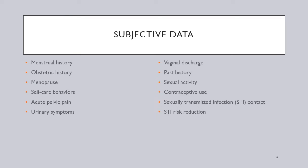Ask about self-care behaviors such as annual gynecological checkups and pap tests if they've ever been sexually active—that's critical. Talk to them about pelvic pain or discomfort with or without intercourse. Examine urinary symptoms indicative of a urinary tract infection, very similar to the male urinary assessment: urgency, frequency, burning, nocturia, hematuria, changes in color or smell of urine, and any incontinence.